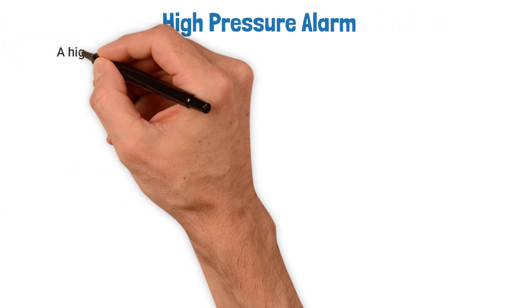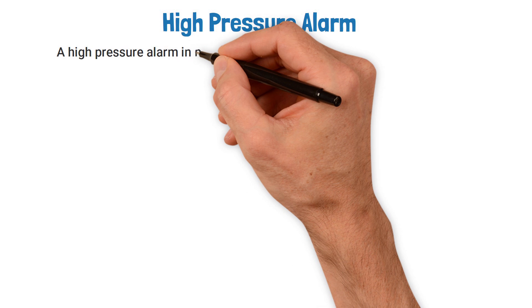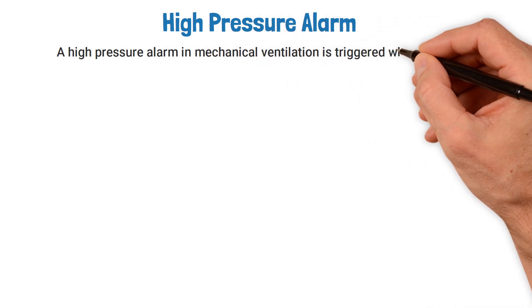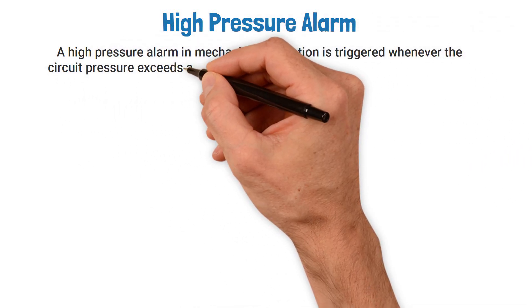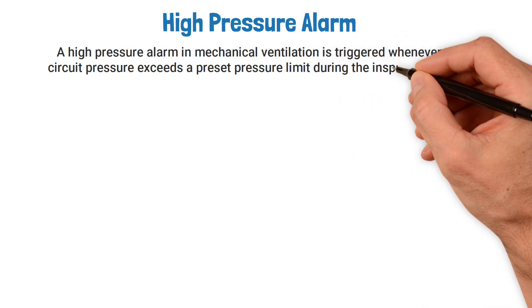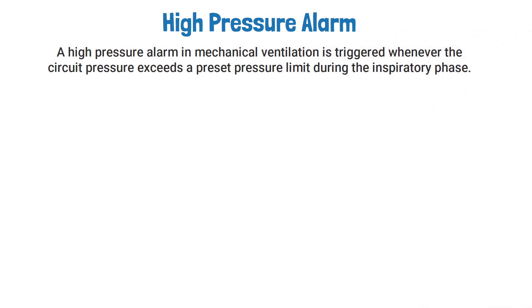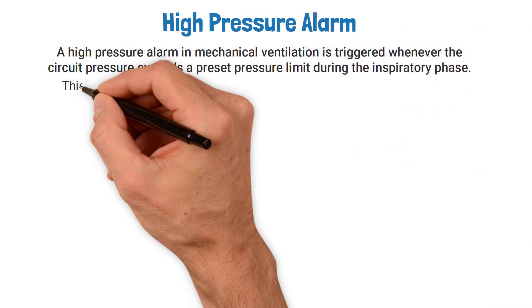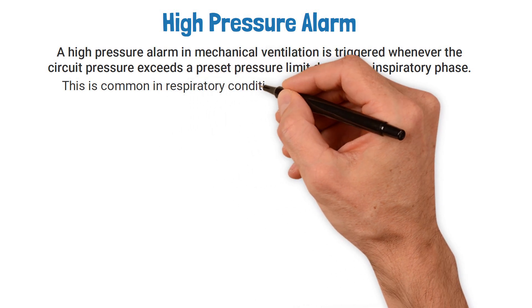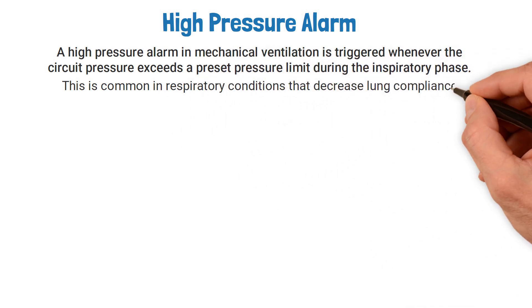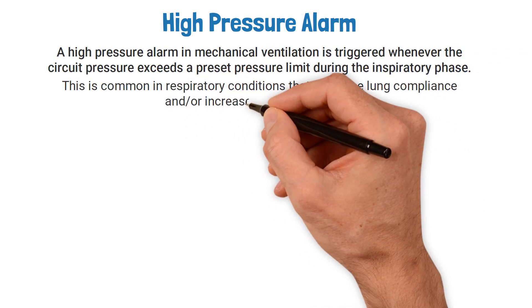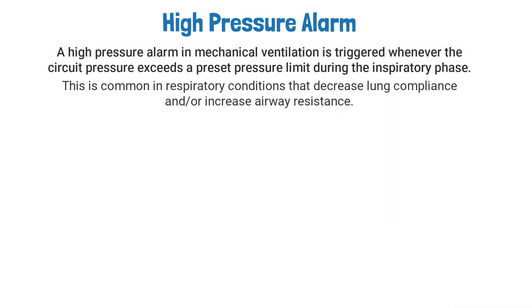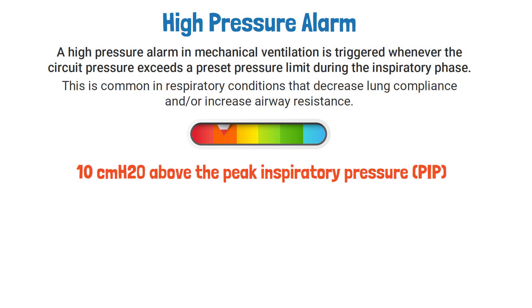A high pressure alarm in mechanical ventilation is triggered whenever the circuit pressure exceeds a preset pressure limit during the inspiratory phase of breathing. This is common in respiratory conditions that decrease lung compliance and/or increase airway resistance. The preset high pressure limit for this alarm is typically set around 10 centimeters of water pressure above the peak inspiratory pressure.